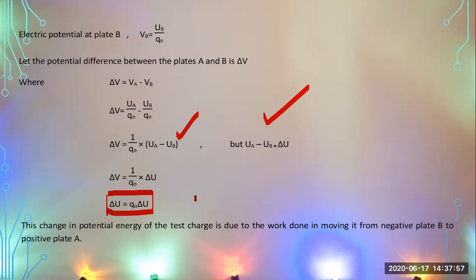The change in potential energy of the test charge particle is due to the work done in moving it from negative plate B to positive plate A. When you move a charge from negative to positive, you overcome the repulsive force from the positive plate, doing work equal to the change in potential energy: ΔU = q-naught × ΔV.